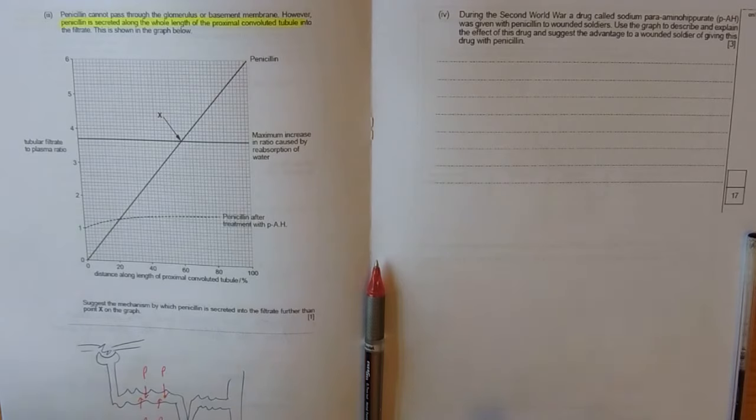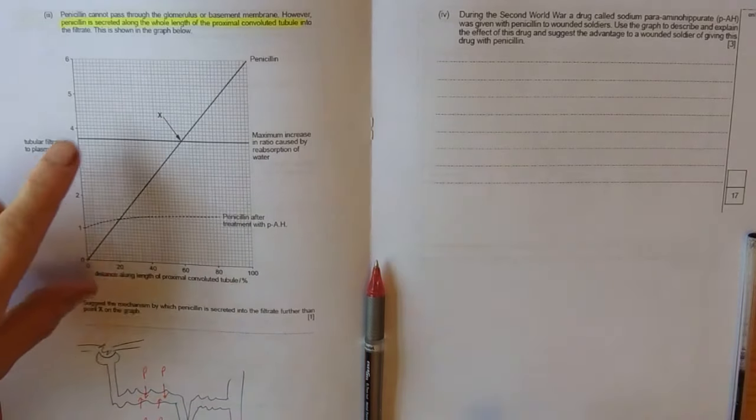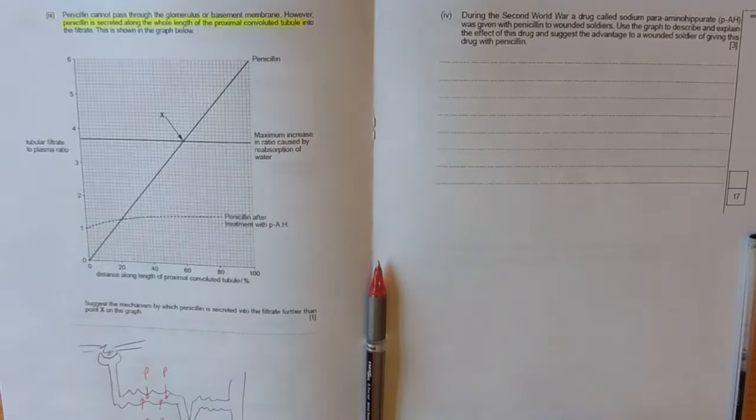Part 3. Penicillin cannot pass through the glomerulus or basement membrane, however it's secreted along the whole length of the proximal convoluted tubule.